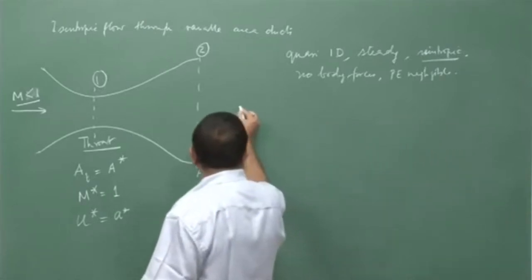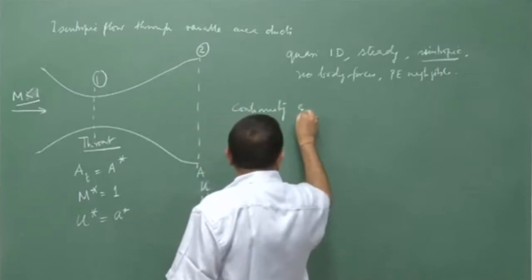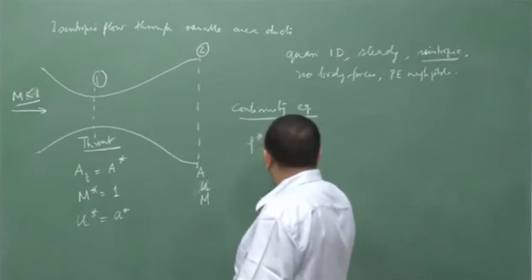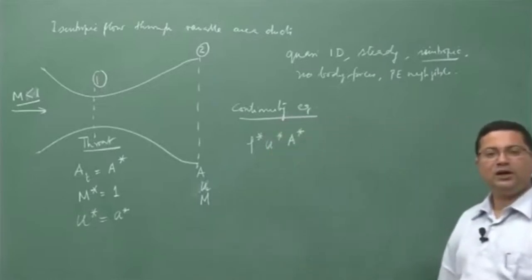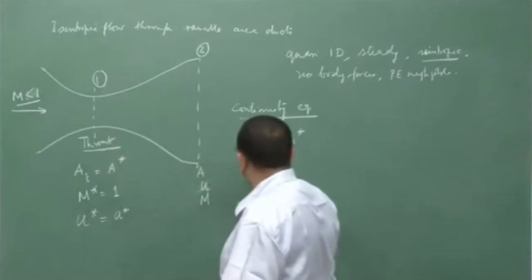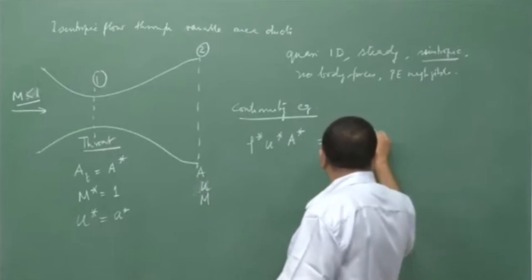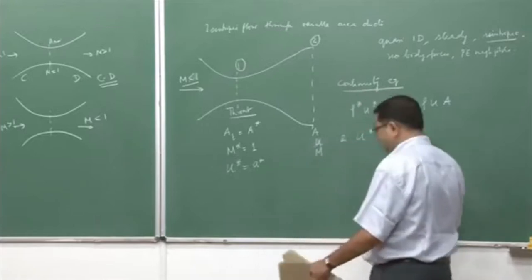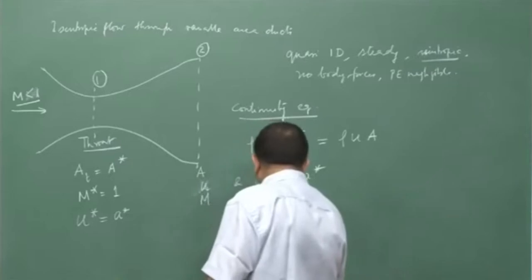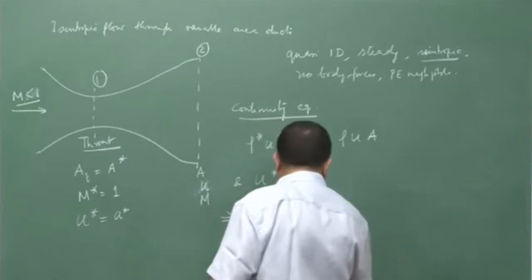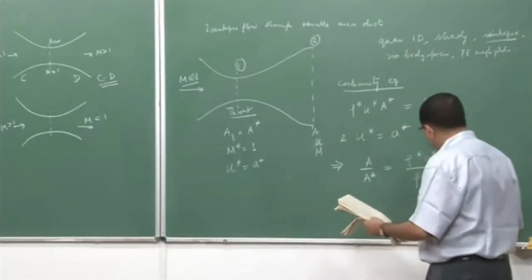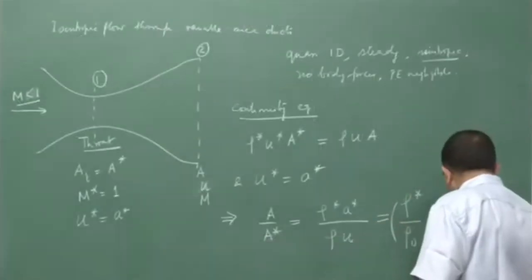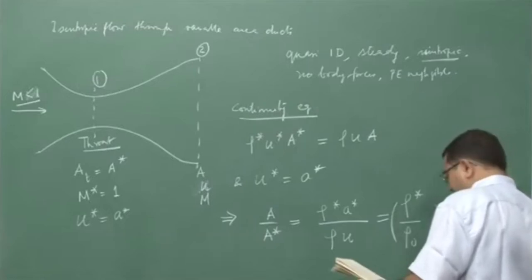Now we want to analyze the flow for this case. First, from the continuity equation, we have shown that ρ₁u₁A₁ = ρ₂u₂A₂. In this case, position 1 is at the throat, so A*u*ρ* = ρuA. We also have the condition that u* = a* (velocity equals speed of sound at throat). Therefore, we can write A/A* = ρ*a* / (ρu). Let me call this equation 1.